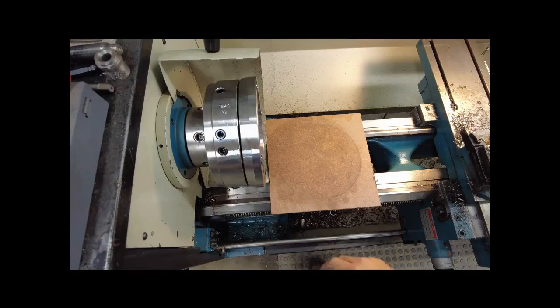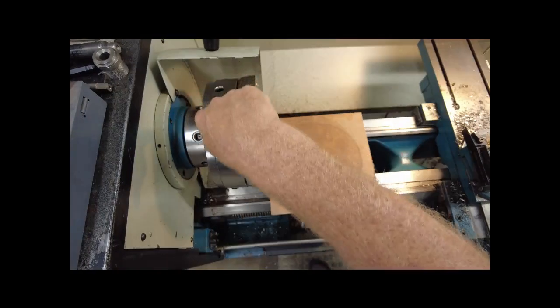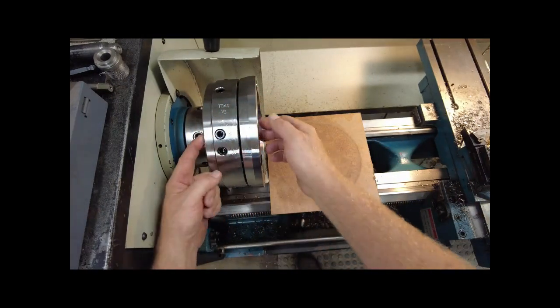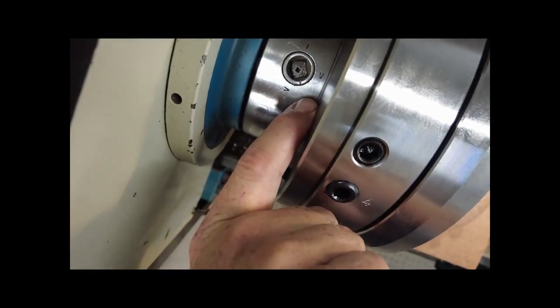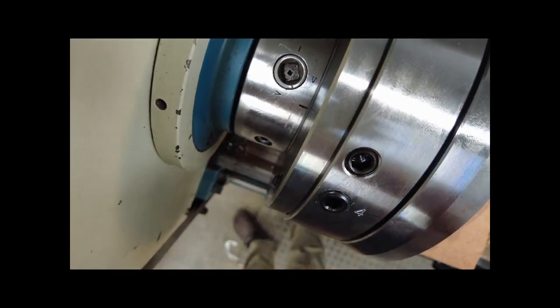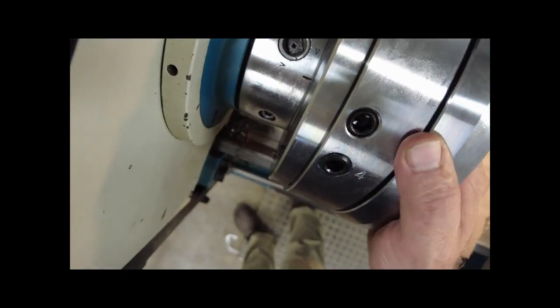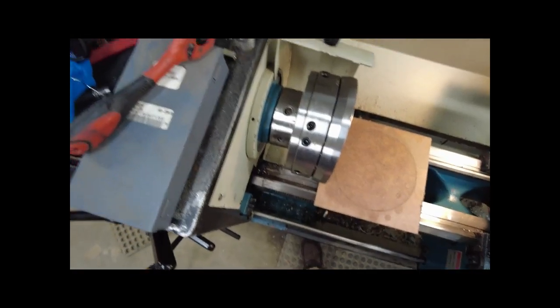It is good practice to mark the spindle adapter plate. There is a reference mark on the spindle. Use a center punch or a scribe to mark so you reinstall in the same rotation each time.